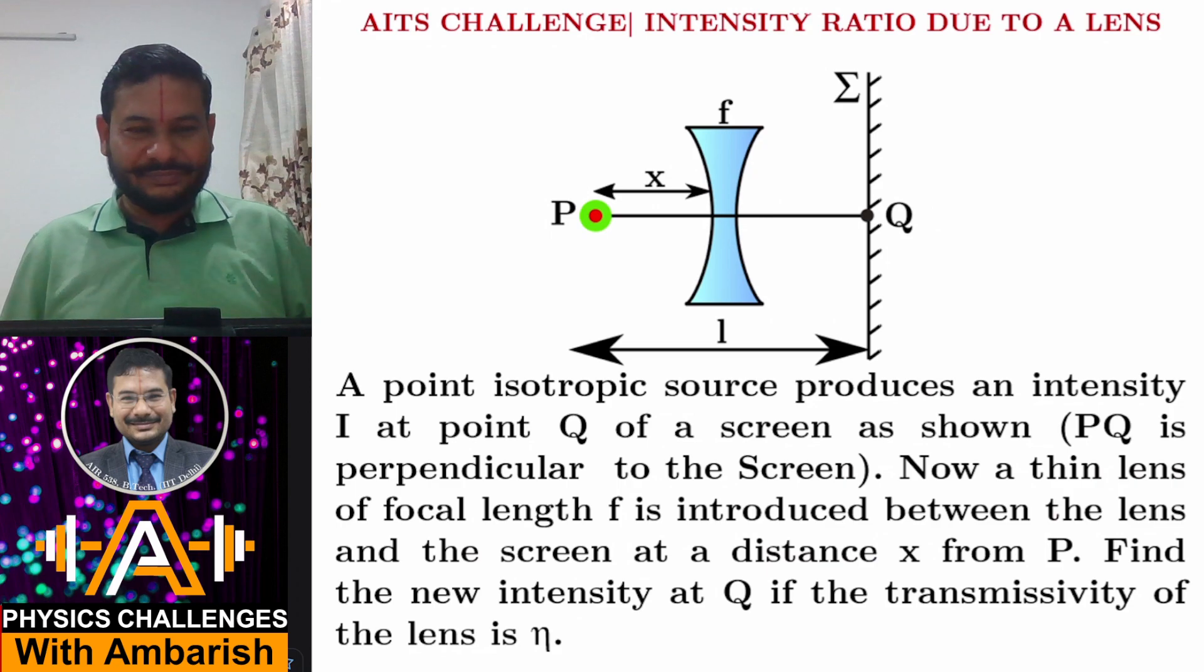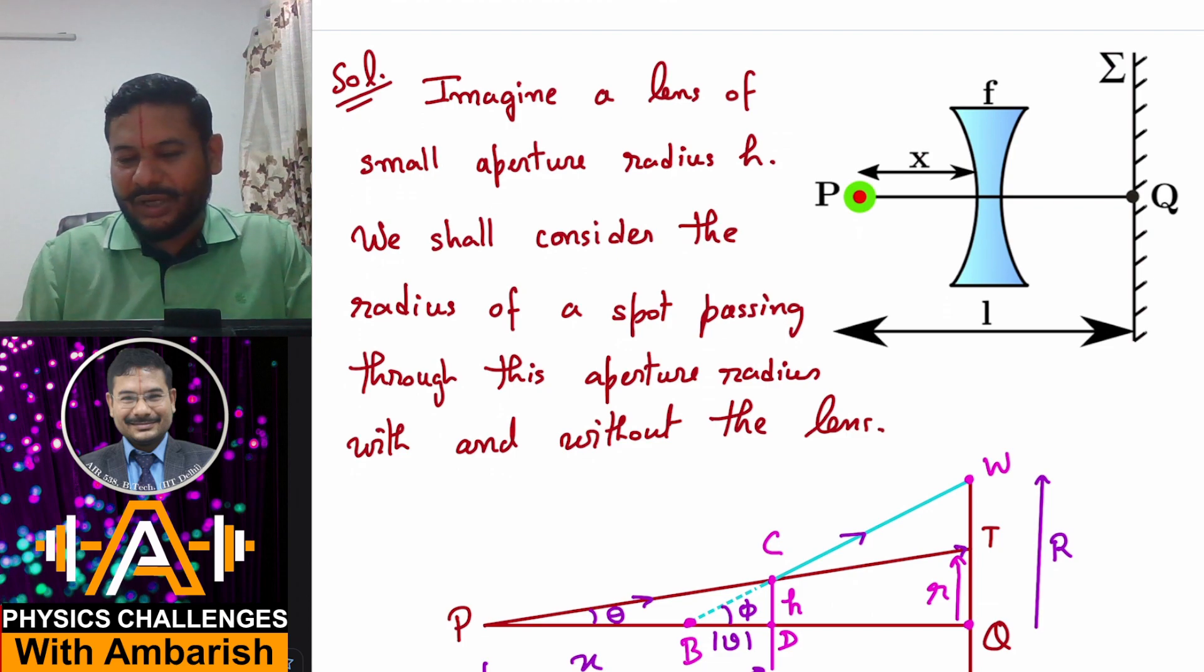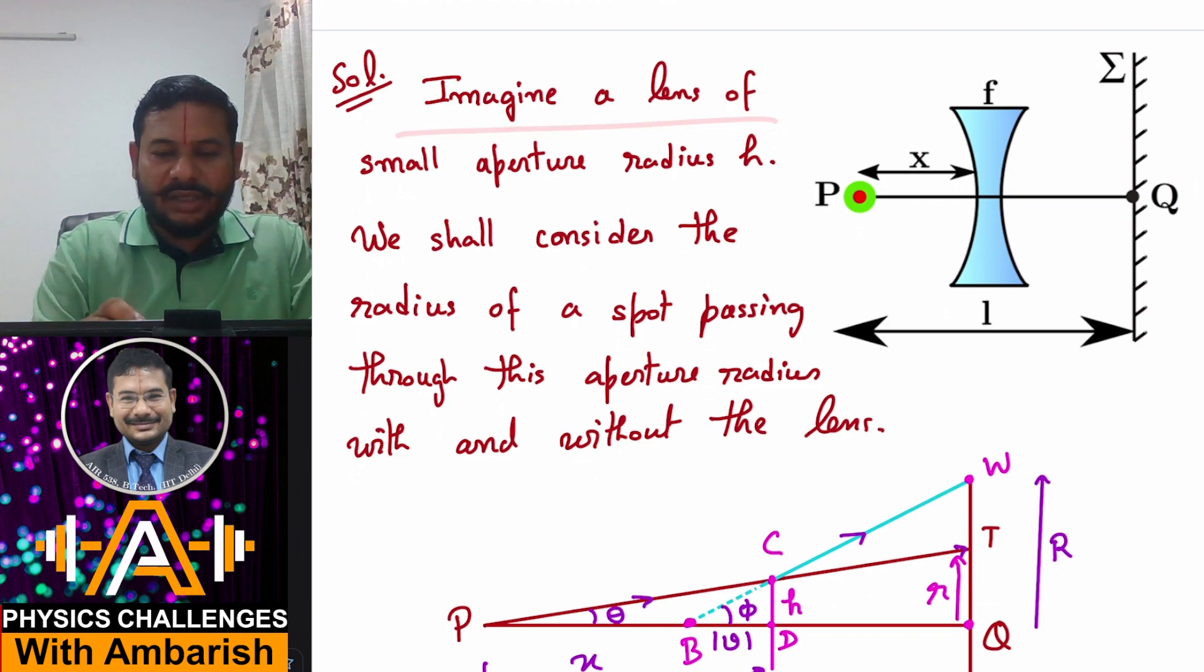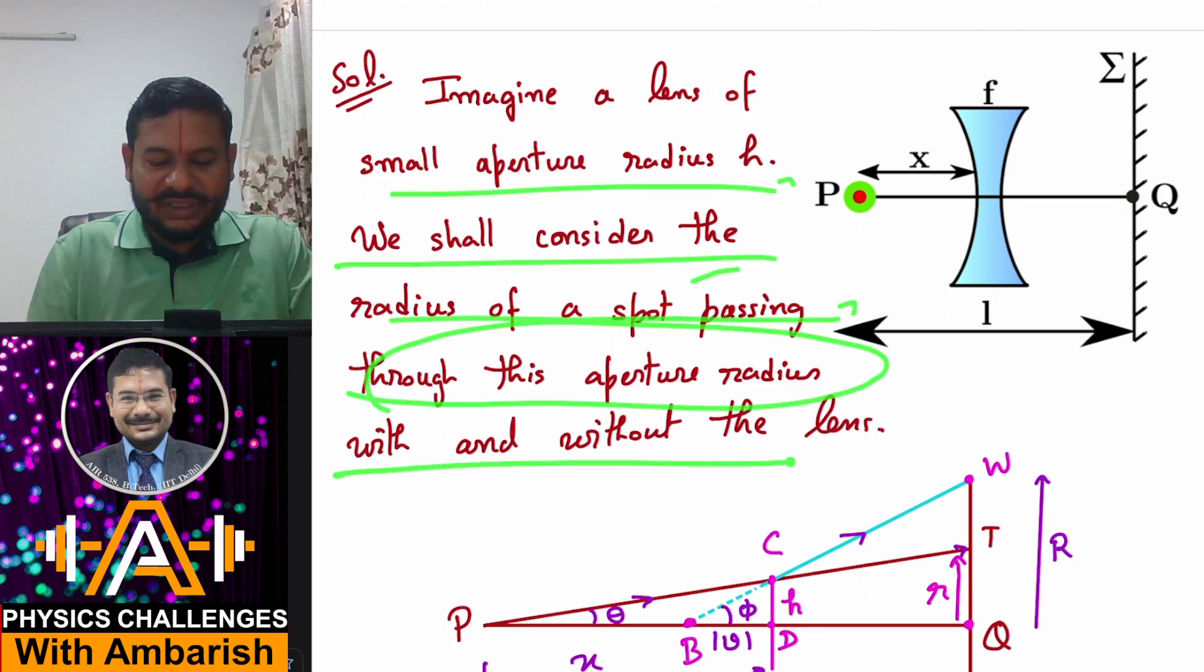Let us see, whatever is the intensity at point Q has nothing to do with the size of the lens. The rays reaching Q are passing through only the central region of the lens, so it doesn't matter whether the lens is large or small because intensity near Q only depends on very few rays going through near the center of the lens. So the size of the lens does not matter. We might as well assume a very small aperture lens for accurate modeling of the problem. Imagine a lens of aperture radius h. We shall consider the radius of spot passing through this aperture with and without the lens.